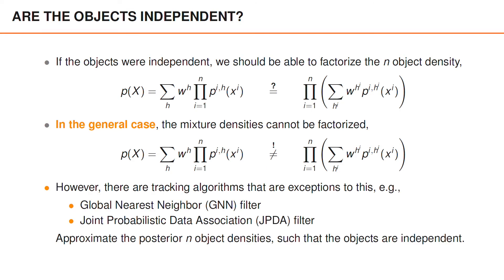However, there are tracking algorithms that are exceptions to this. For example, global nearest neighbor or GNN filter and joint probabilistic data association or JPDA filter.